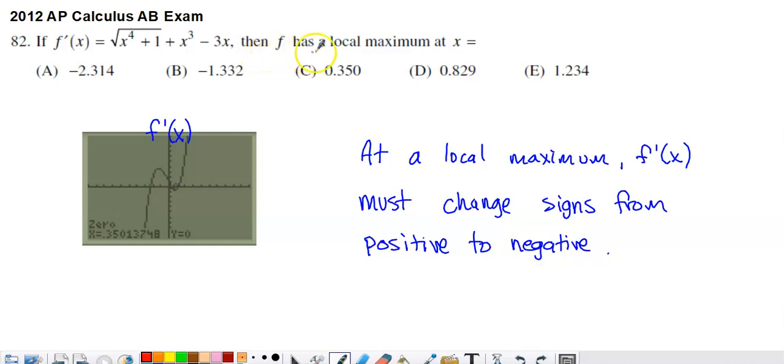We're asked to determine where f has a local maximum, the x value where f has a local maximum. So hopefully you think, well, I need to know critical numbers, so I'm going to set this derivative equal to zero. I'm then going to build a sign chart, and I'm going to look for a place where for a local maximum, I would have to go from increasing to the left to decreasing to the right. That's not wrong. That's going to take some time.